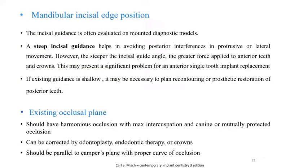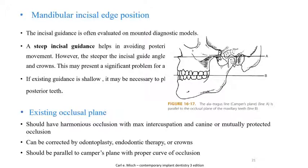For mandibular incisal edge position, incisal guidance is evaluated on mounted diagnostic models. A steep incisal guidance helps avoid posterior interferences in protrusive or lateral movement; however, the steeper the incisal guide angle, the greater the force applied to the anterior teeth and crowns. This may present a significant problem for an anterior single tooth implant replacement. If existing guidance is shallow, it may be necessary to plan recontouring or prosthetic restoration of the posterior teeth. The existing occlusion plane should have harmonious occlusion with maximum intercuspation and canine or mutually protected occlusion. It can be corrected by odontoplasty, endodontic therapy, or crowns, and should be parallel to the Camper's plane with a proper curve of occlusion.